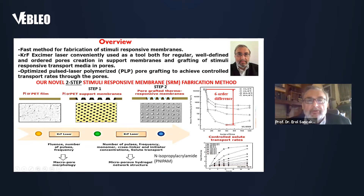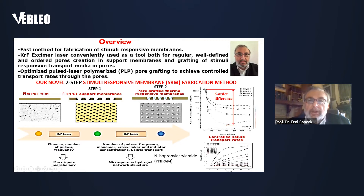In the second step, we again use the same excimer laser — in this case for PLP, for pore grafting of hydrogel material, which will be our responsive tool for the gating membrane. The process variables involve laser parameters, as well as the grafted hydrogel properties, including the monomer used, the cross-linker, and the initiator. This way, we are converting our macro pore morphology created in the first step to a micro pore morphology within the hydrogel, which is cross-linked and offers a tortuous path.